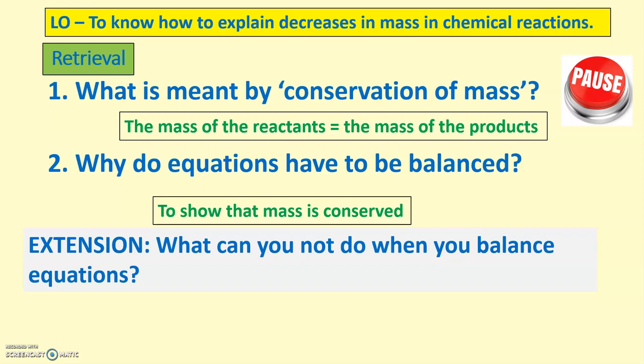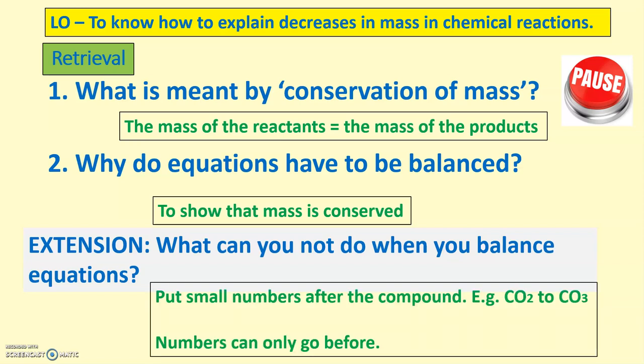And the final question, if you go on to extension, what can you not do when you balance equations? You cannot put small numbers after the compound. For example, CO2 and CO3. You cannot change the number from a 2 to a 3 because that changes from CO2 to CO3 trioxide.